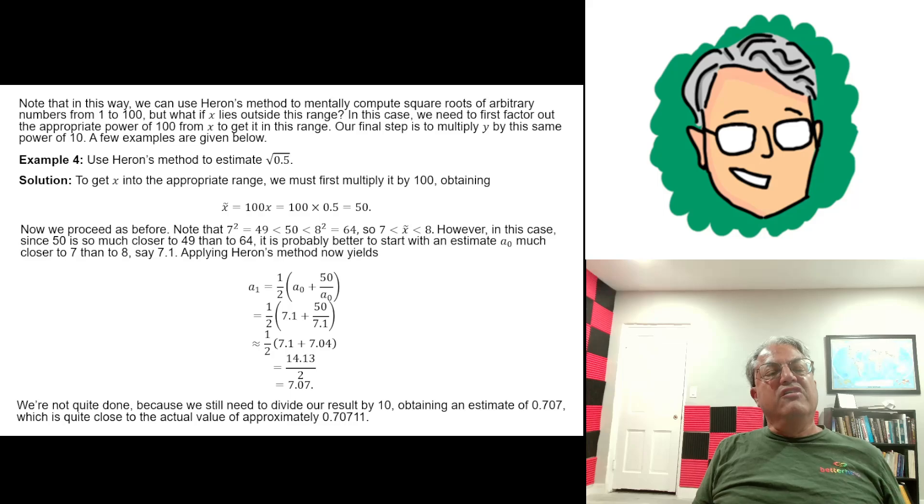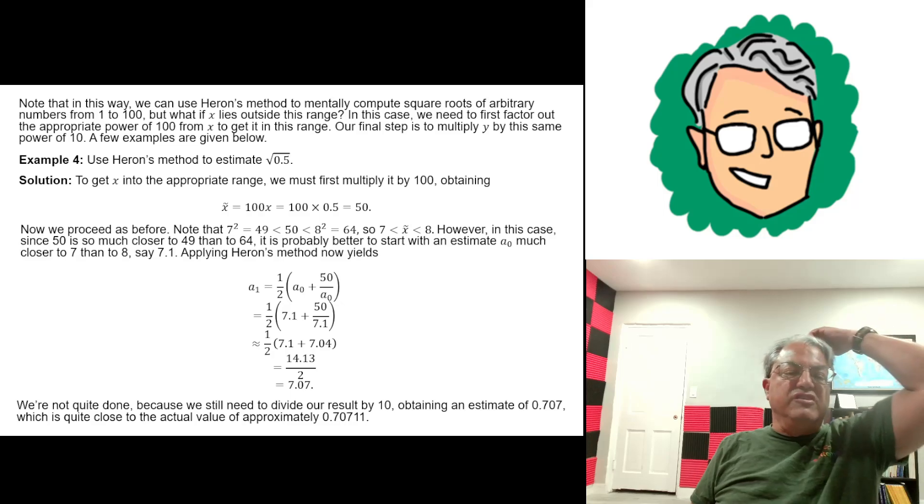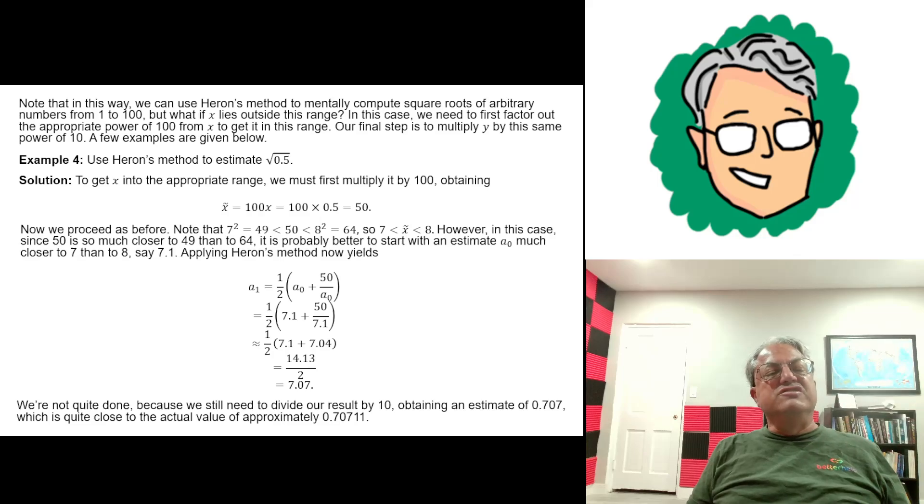Let's see what happens if we do that. We're going to get 1/2 times 7.1 plus 50 over 7.1. 7.1 times 7 is 49.7. That gives you a difference of 0.3. 0.3 over 7.1 is about 0.04. So you're going to get 7.04 approximately for the quotient on the right. Now you just take 7.1 plus 7.04, that's 14.14. 14.14 over 2 is 7.07. And remember, there's one step remaining. We have to divide by 10. So if we do that, we get 0.707, which turns out to be very close to the correct answer, which is 0.70711. So again, this method works.